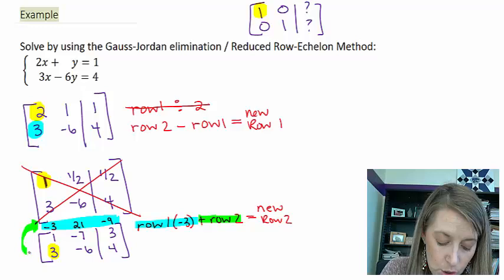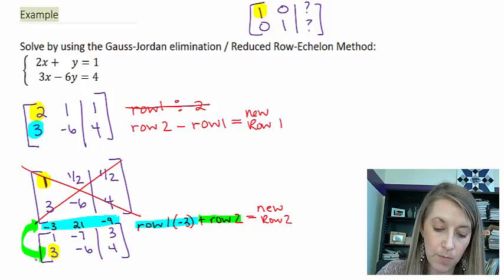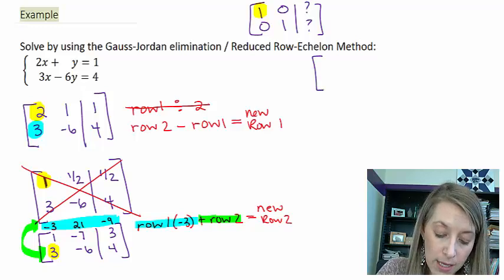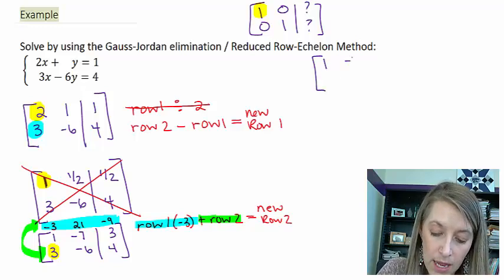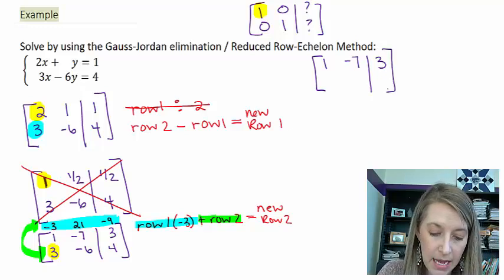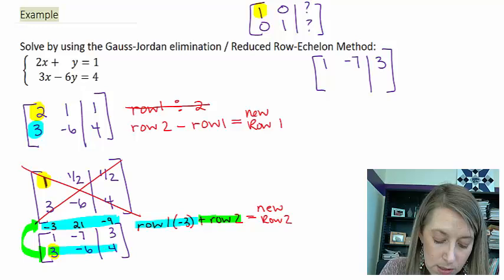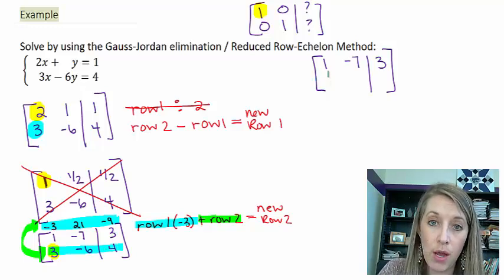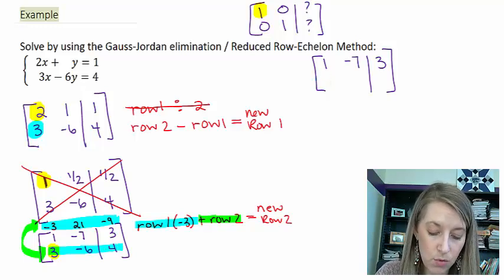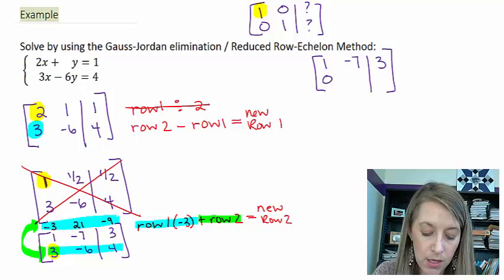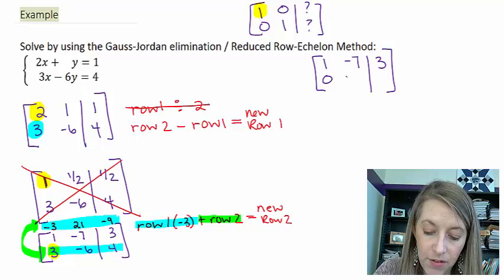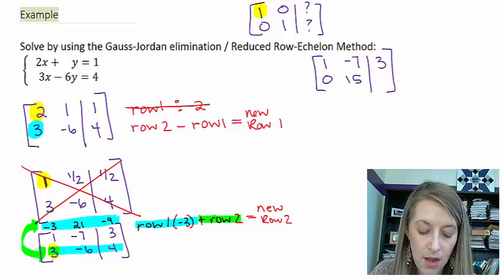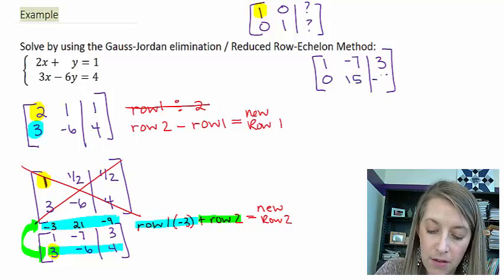Then I add that to row 2. I add my scratch work and I add this right here. That becomes my new row 2, meaning my row 1 stays the same at 1, negative 7, 3. And then I add these two highlighted rows, and that should cancel out where I wanted this to be. Negative 3 plus 3 gives me 0. 21 minus 6 gives me 15. Negative 9 plus 4 gives me negative 5.